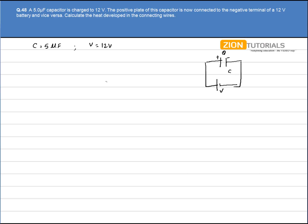Now, after the positive plate of this capacitor is connected to the negative terminal, the situation changes to capacitor connected with such a battery, such that the positive plate is now connected to the negative terminal of the battery.